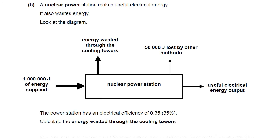The next section is talking about nuclear power stations. It makes useful electrical energy — so the output here is electrical energy — but it also wastes energy. Look at the diagram: we've got the energy supplied, some energy wasted through the cooling towers, 50,000 joules lost by other methods, and useful electrical output. The power station has an efficiency of 0.35 or 35%. Calculate the wasted energy through the cooling towers. Think about what you can do with that data to help you calculate the output.